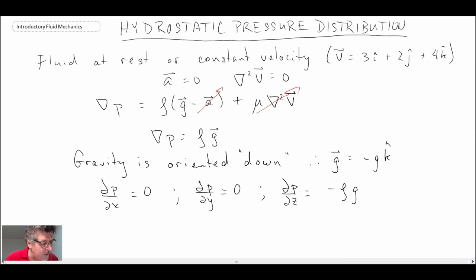And with this, that means that pressure is only a function of z. So we can rewrite that as an ordinary differential, and we get dp by dz is equal to minus rho g. So this is going to be the equation that we're going to work with for hydrostatic pressure distribution.